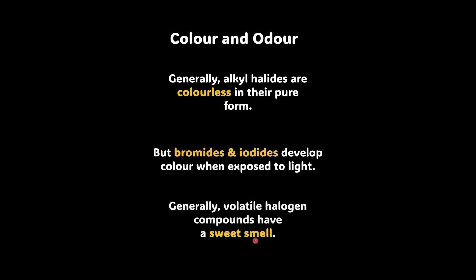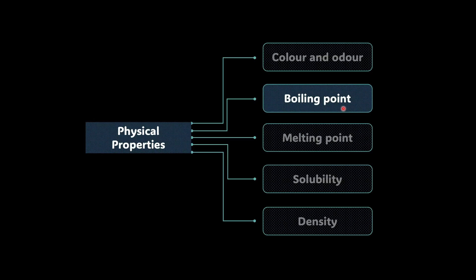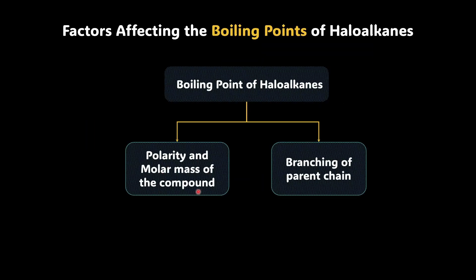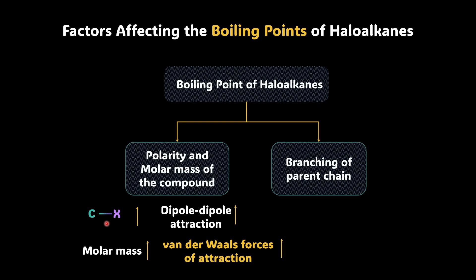Talking about the boiling point, this is one of the most important physical properties. Boiling point depends on the polarity and the molar mass of the compound, and it also depends on the branching of the parent chain. As the polarity increases, the dipole-dipole attraction increases, and our carbon-halogen bond is indeed polar. As the molar mass increases, the van der Waal forces of attraction also increase.